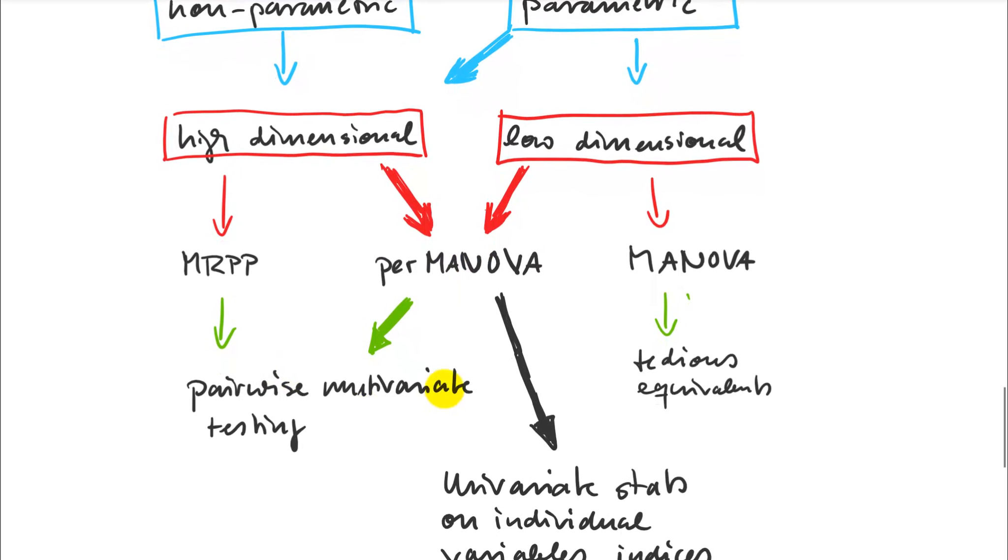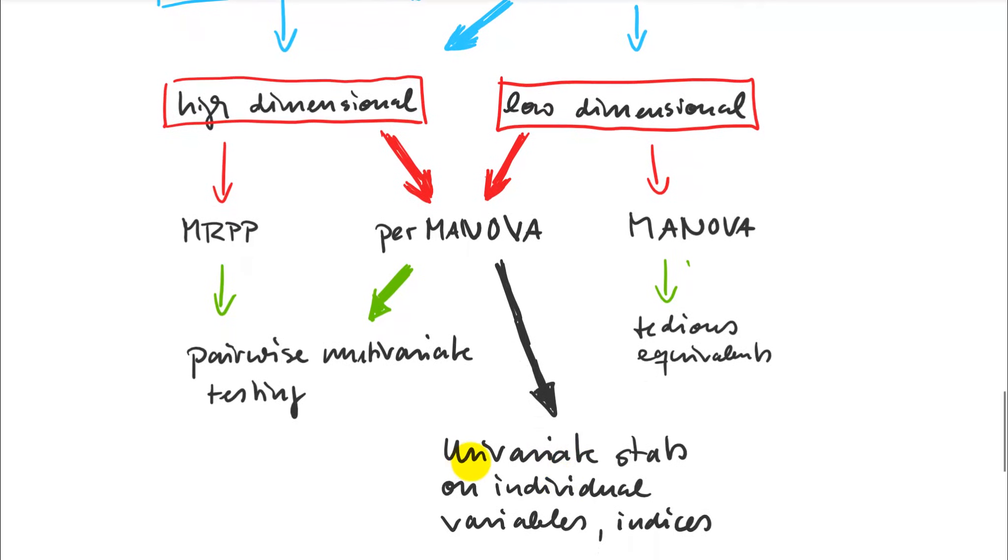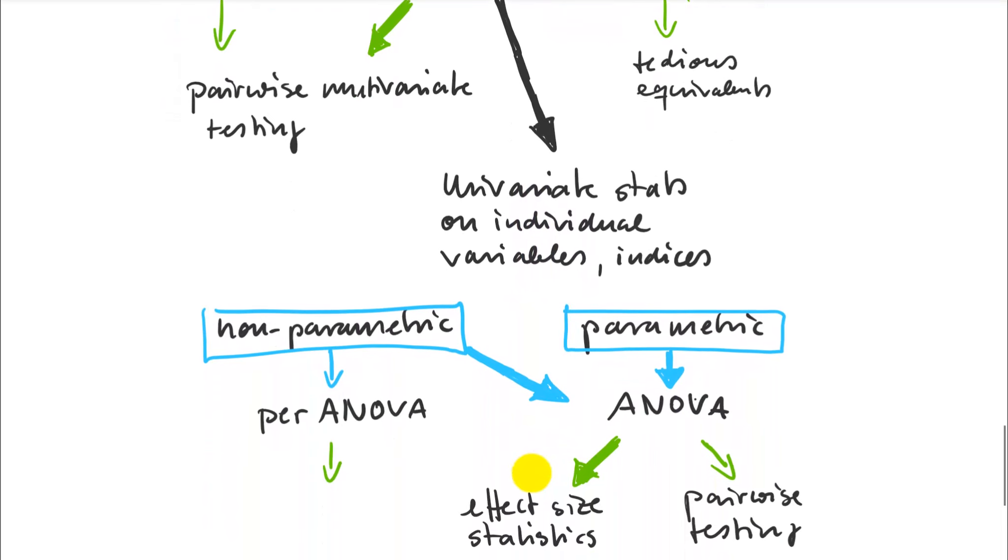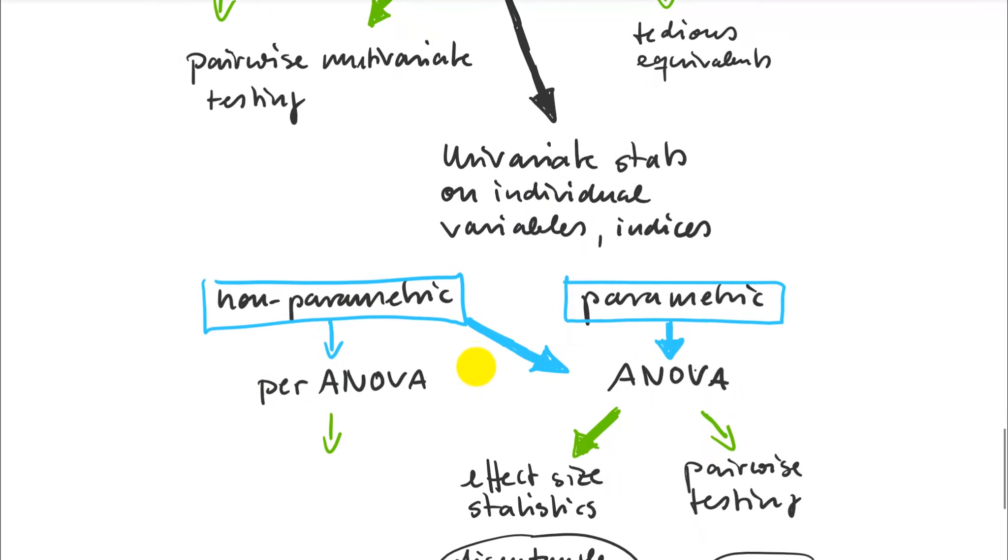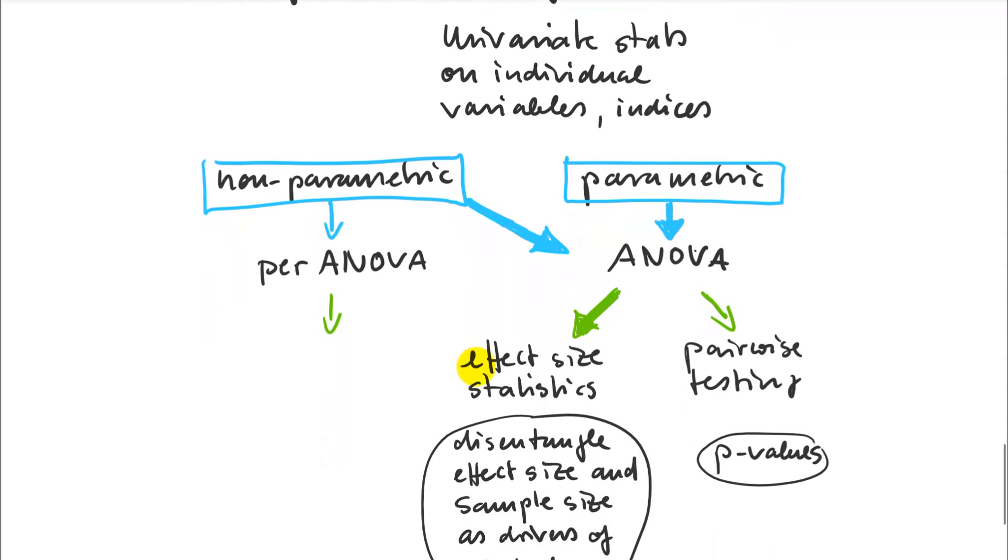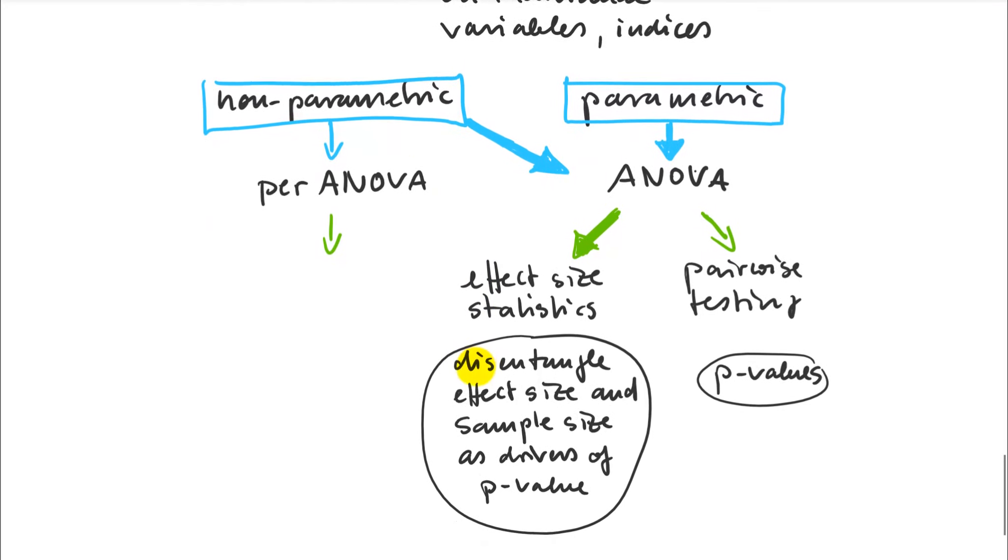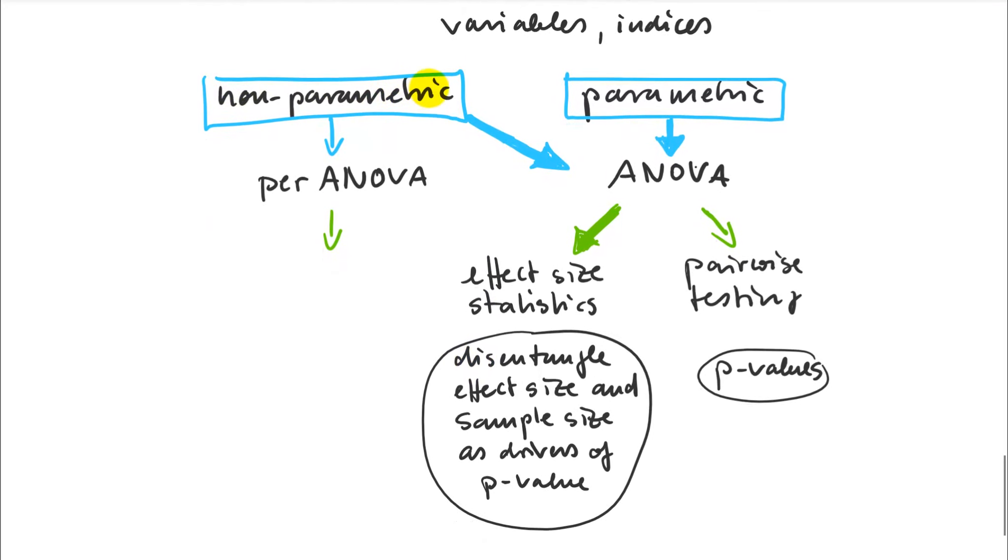Once you have your pairwise testing in multivariate space done, you may also want to drill down to individual variables or summary variables and see what drives your statistical differences between groups - these particular individual variables. In the univariate space, these are my recommendations on how to proceed.